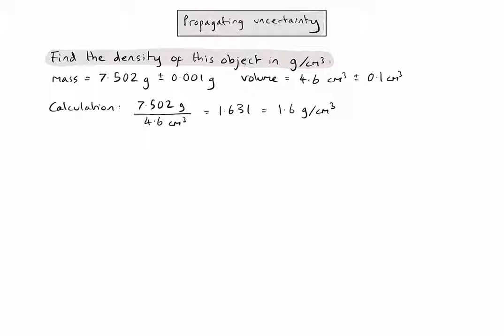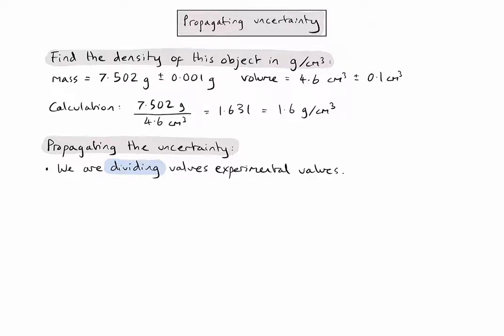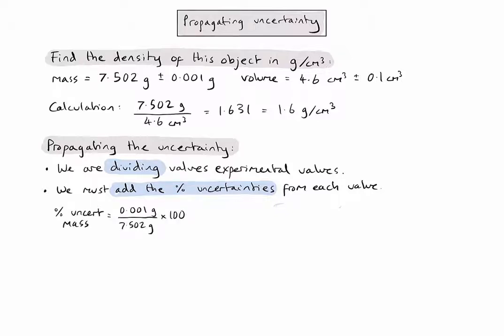Now I need to consider how to propagate uncertainty through that calculation. In my calculation I was dividing values, so according to rule two, we must add together the percentage uncertainties from each value. The uncertainty values given are absolute uncertainties, so before adding them together I need to convert each one into a percentage uncertainty. Let's do that first for the mass measurement — because I'm multiplying or dividing, I use the smallest number of significant figures, which is one. I also need to convert the absolute uncertainty in the volume measurement into a percentage uncertainty using the same formula, again giving the answer to one significant figure.